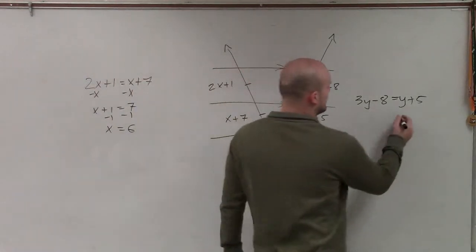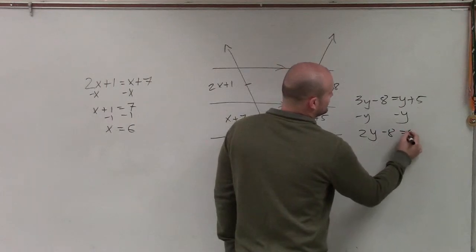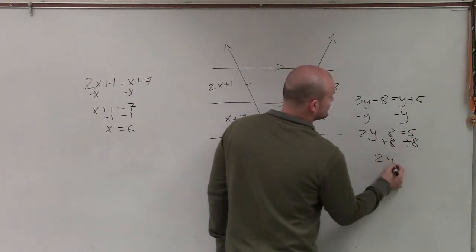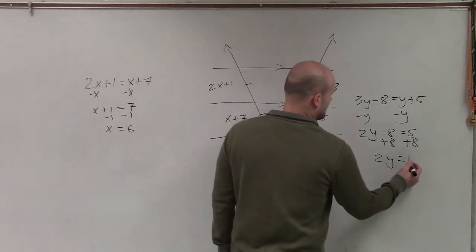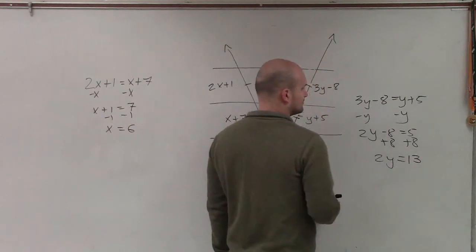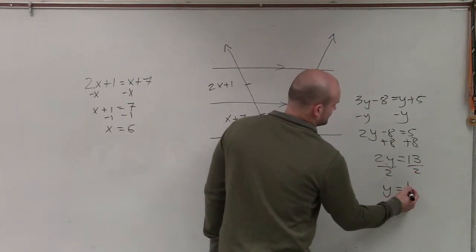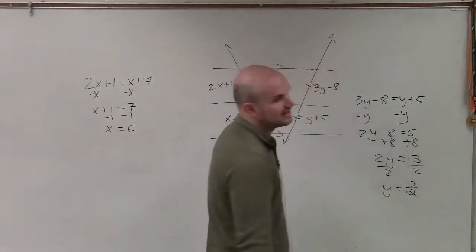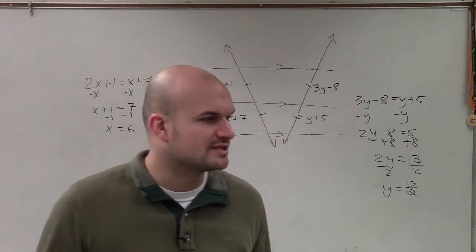Over here, I subtract the y. 2y minus 8 equals 5. Add the 8, add the 8. 2y equals 13. And we'll just leave that as 13 halves, even though you could say 6.5, but I want to leave it as a fraction.